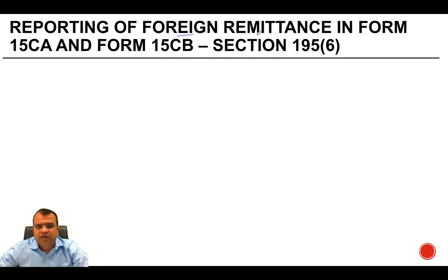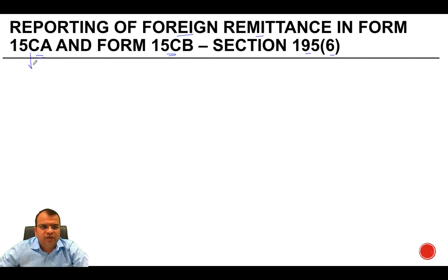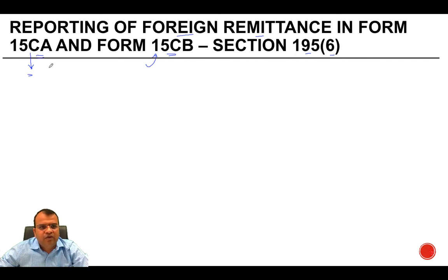This covers reporting of foreign remittance in Form 15 CA and Form 15 CB under Section 195, subsection 6. When a person remitting any amount to a non-resident, they must provide information to the income tax department in Form 15 CA. In some cases, Form 15 CB — a certificate from a chartered accountant — must also be obtained prior to giving such declaration.